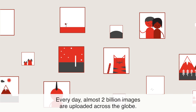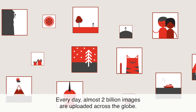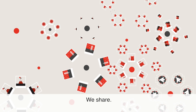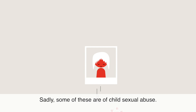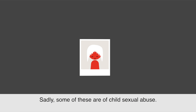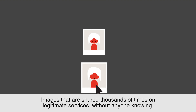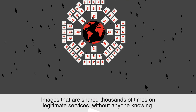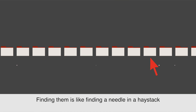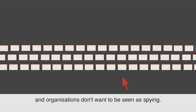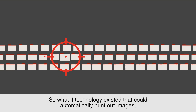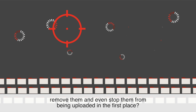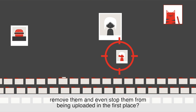Every day, almost two billion images are uploaded across the globe. We click, we post, we share — it's become our way of life. Sadly, some of these are of child sexual abuse, images that are shared thousands of times on legitimate services without anyone knowing. Finding them is like finding a needle in a haystack, and organizations don't want to be seen as spying. So what if technology existed that could automatically hunt out images, remove them, and even stop them from being uploaded in the first place?